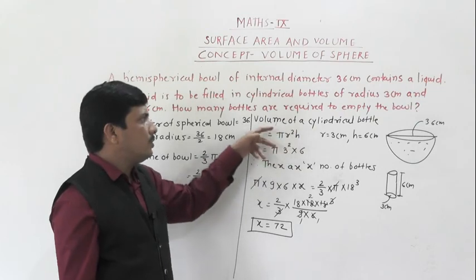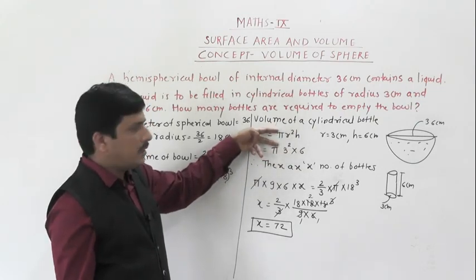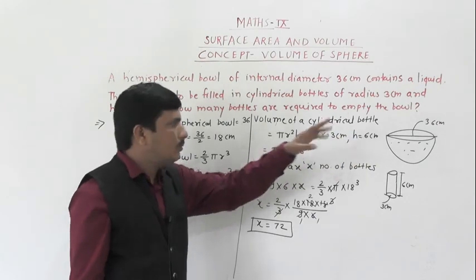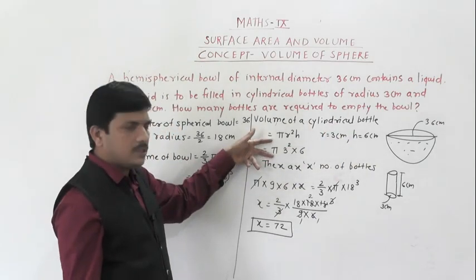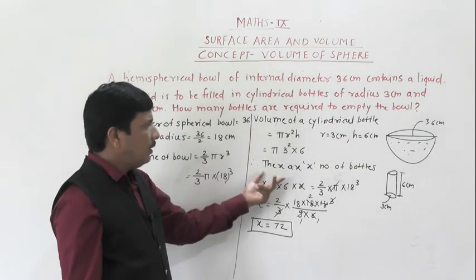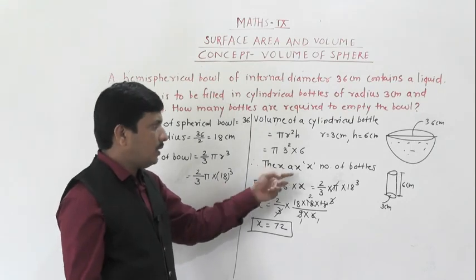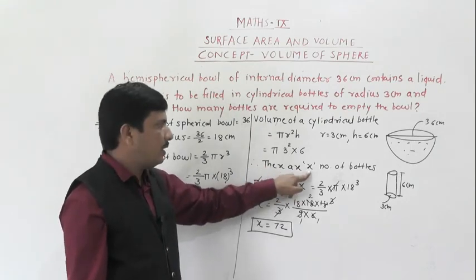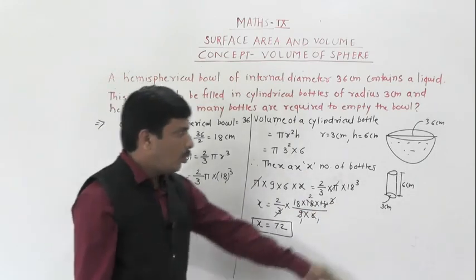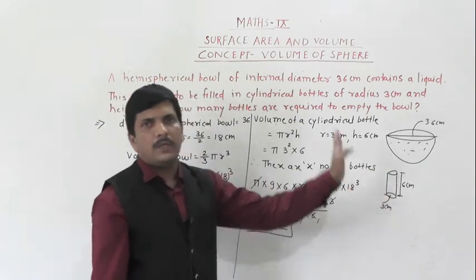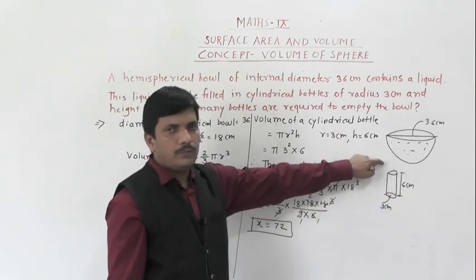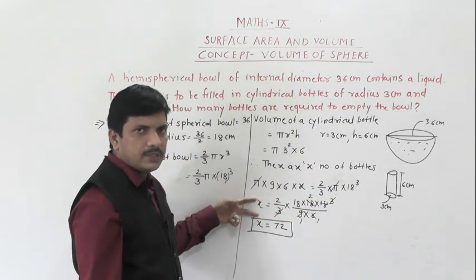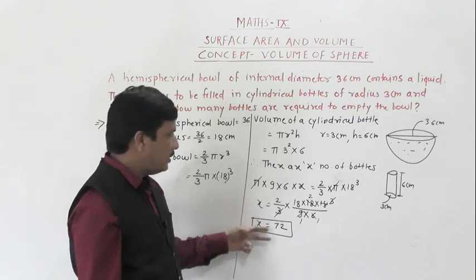Volume of the cylinder is π × r² × h. Radius and height were directly given, so we substituted them. We assumed x number of bottles, so volume of a single bottle multiplied by number of bottles equals the volume of the hemisphere. Finally, x equals 72 bottles — that is our answer.